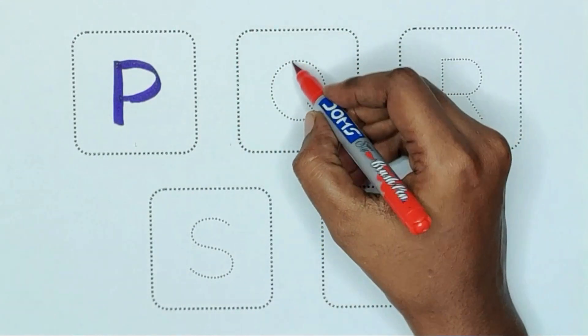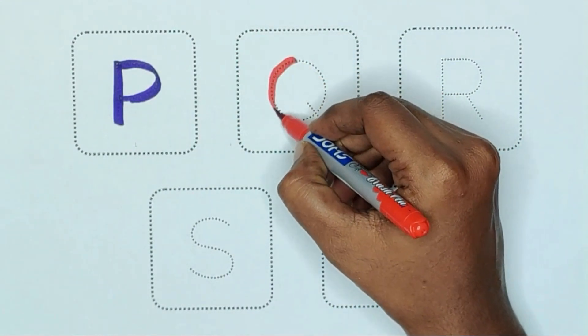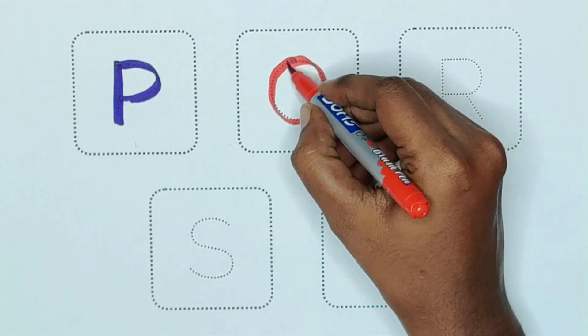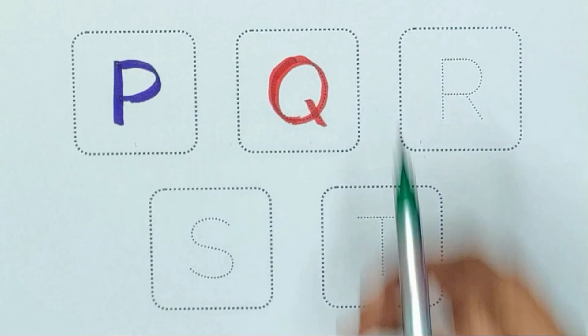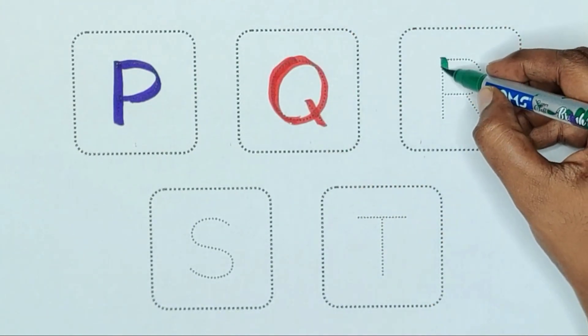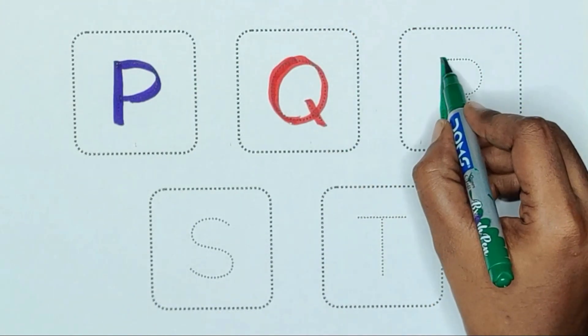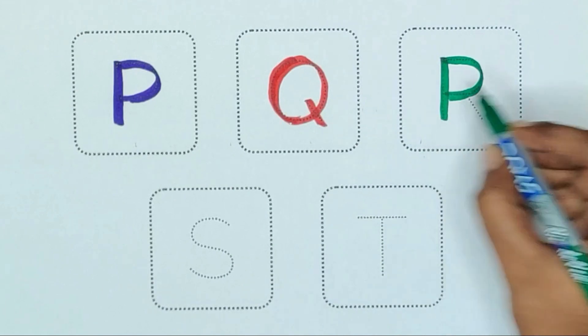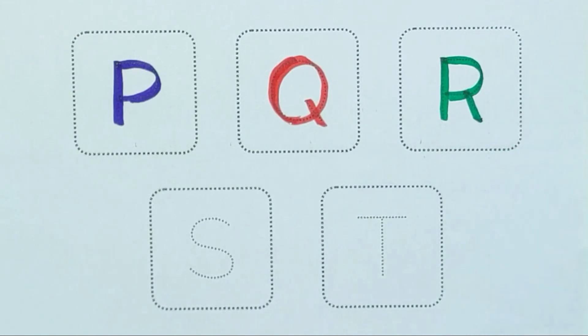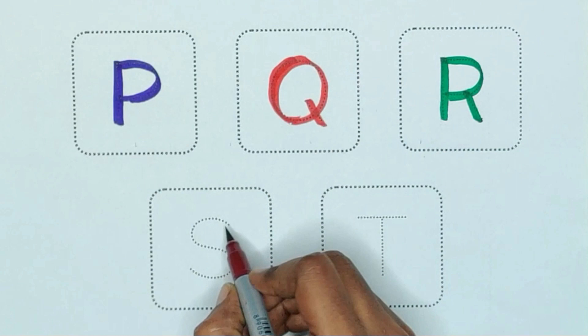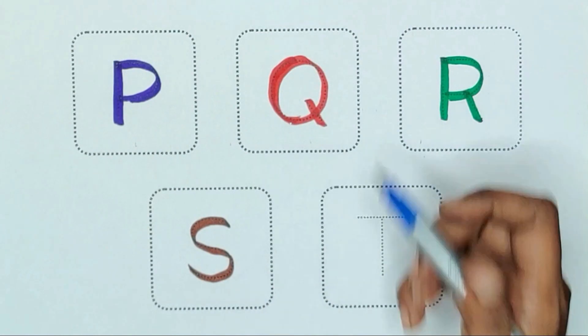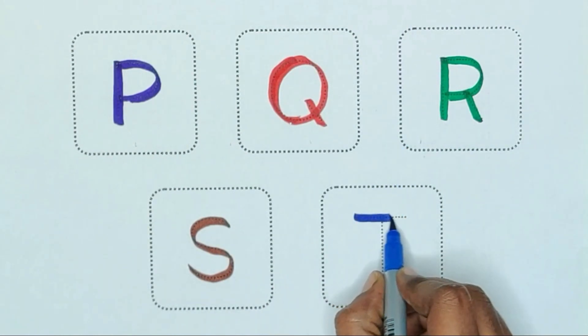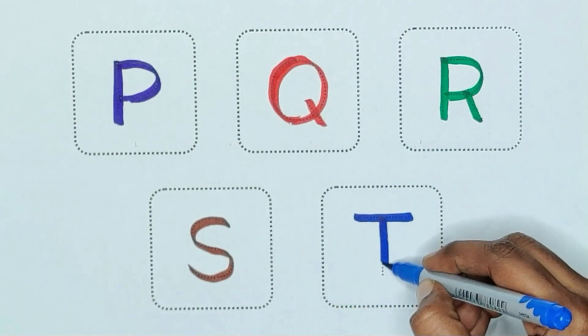Red color, Q, Q for queen. Green color, R, R for rabbit. Brown color, S, S for snake. Blue color, T, T for truck.